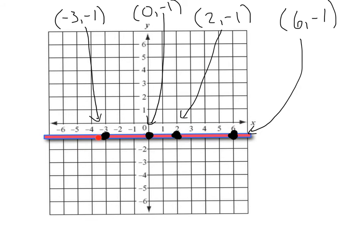Picking some random points on here, we've got (-3,-1), (0,-1), (2,-1), and (6,-1).